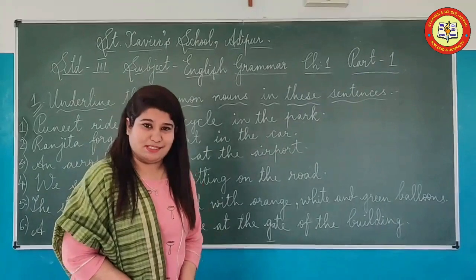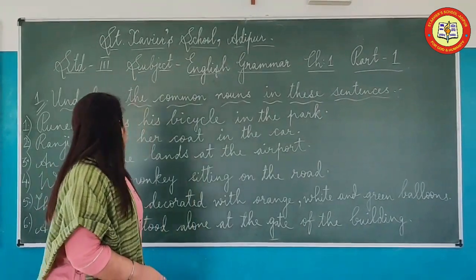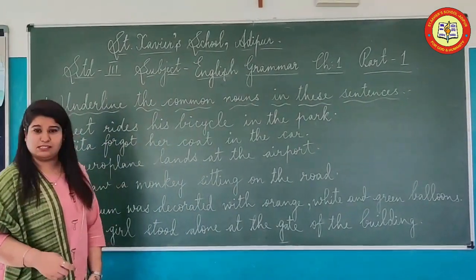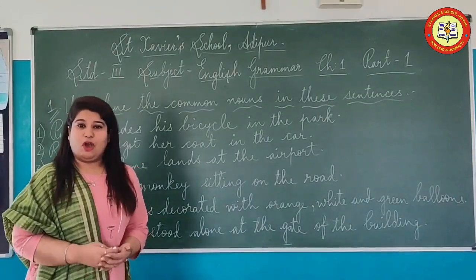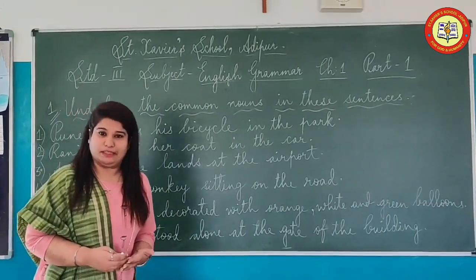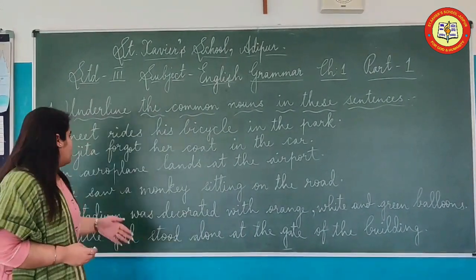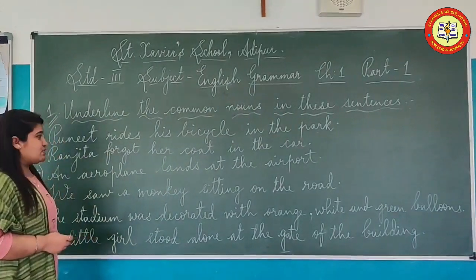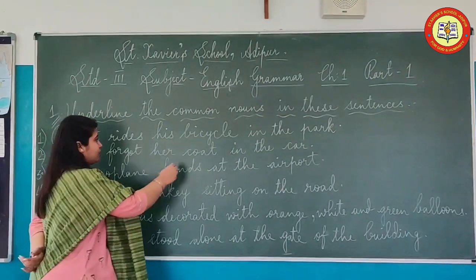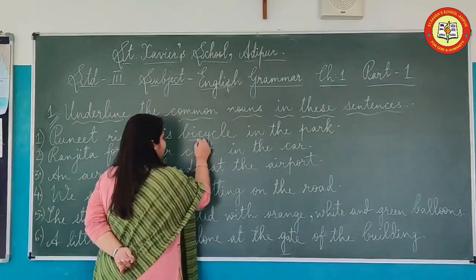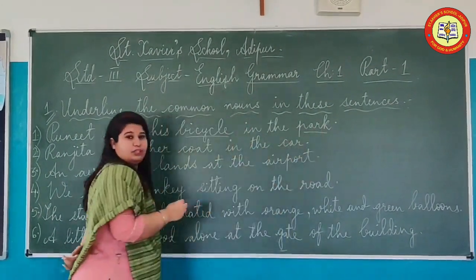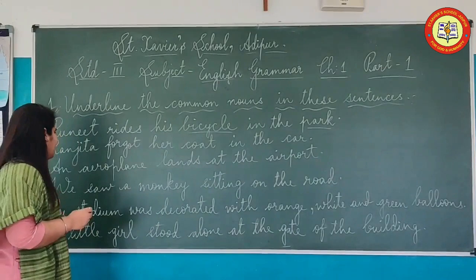Now we are going to start with the exercises. Exercise one — underline the common nouns in these sentences. What is the common noun? The common names of person, places, animal, or thing. In the first sentence: 'Pony rides his bicycle in the park.' What will be the common noun here? Bicycle and path, because we don't know which bicycle and which path.